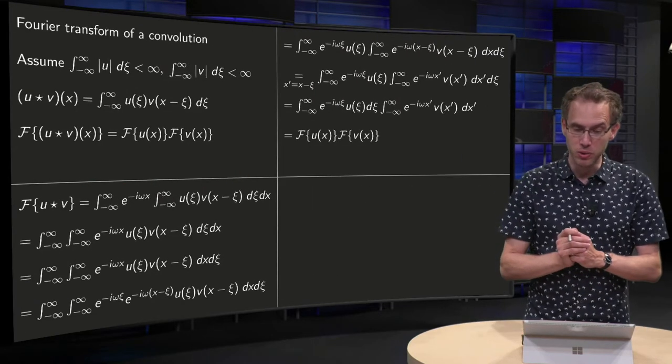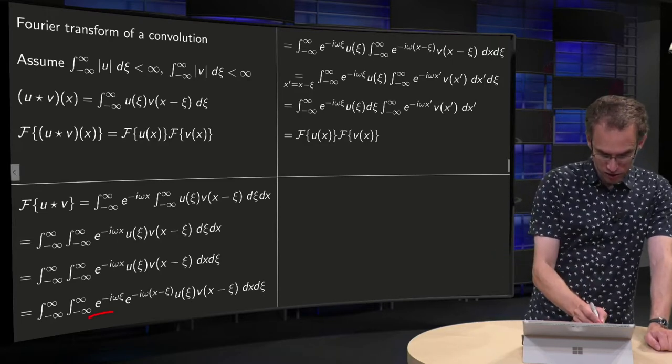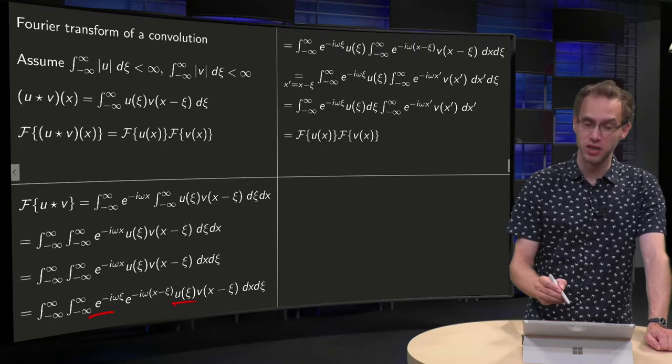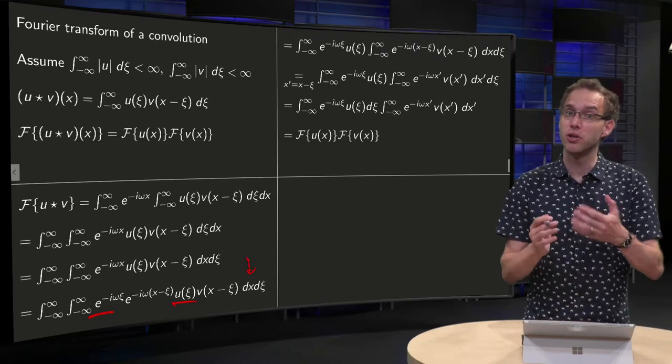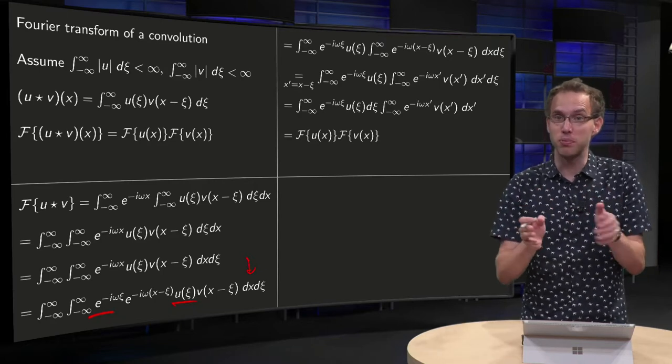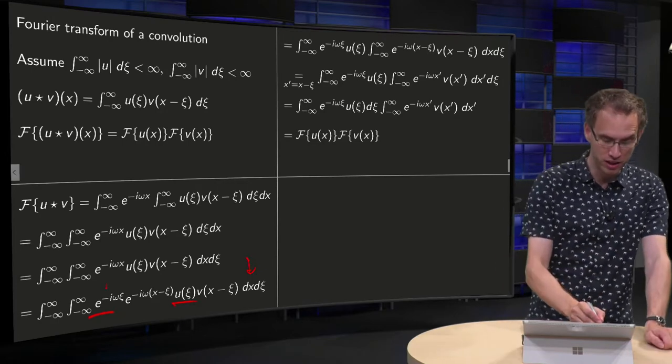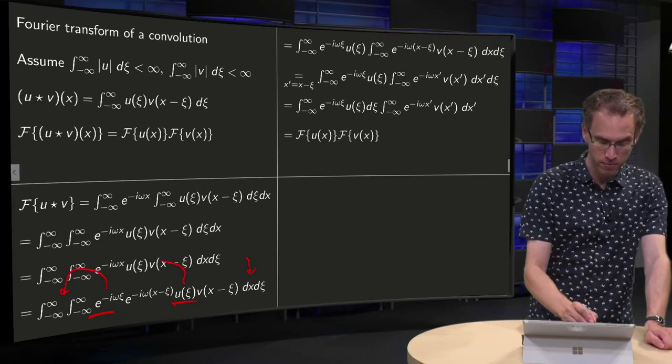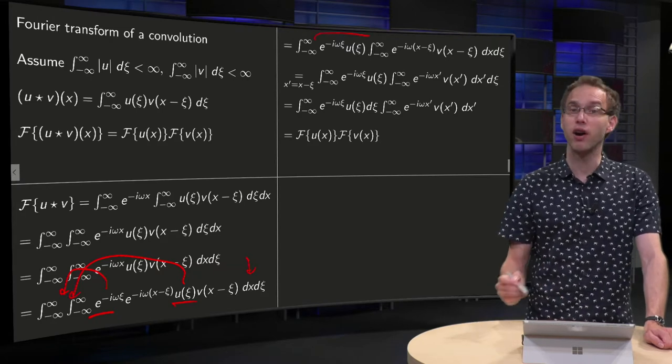So why do we do that? Well, here we have factors which only have xi's and we are integrating with respect to x in the first integral. So those factors which only depend on xi are constants with respect to the integral of x, so you can take them in front of the integration. So we can take them here and here, and then we are over here.